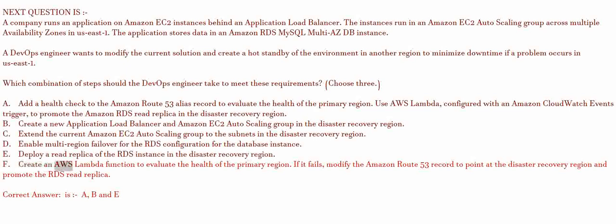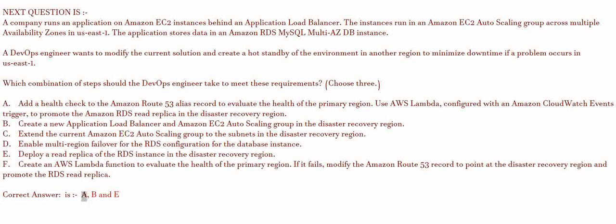Create an AWS Lambda function to evaluate the health of the primary region. If it fails, modify the Amazon Route 53 record to point at the disaster recovery region and promote the RDS read replica. The correct answer is A, B, and E.